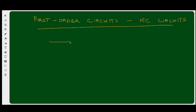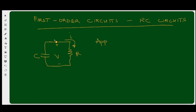Let us consider a circuit that has a resistor and a capacitor — also called the RC circuit. We have the capacitor, the resistor, with voltage v plus/minus marked, and a current going through it. Because they are in series, the same current goes through both elements. We apply Kirchhoff's Current Law to the top node. Remember, in RL circuits we used Kirchhoff's Voltage Law; here we apply KCL.